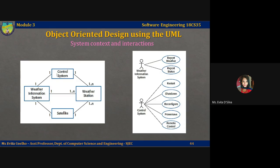Reading the diagram: a control system will control one to N weather stations. Similarly, a weather information system will have information from one to N weather stations. A control system will control one weather information system. A weather information system is monitored by a satellite. A satellite can monitor one up to N weather stations. This shows all the subsystems in the environment of the wilderness weather station and which of these systems are related, and what the cardinality or nature of their relationship is.